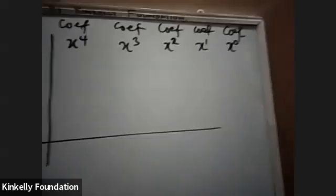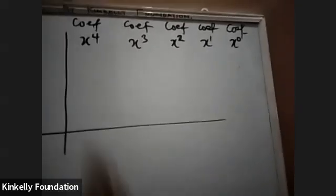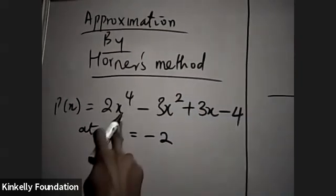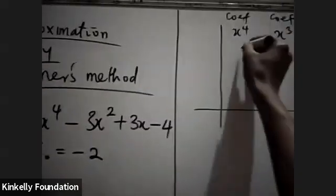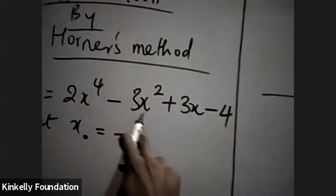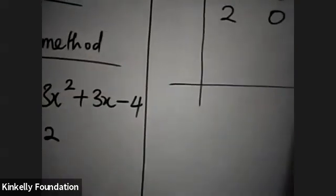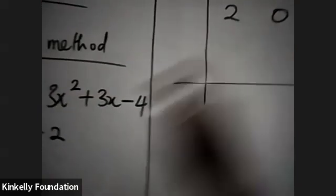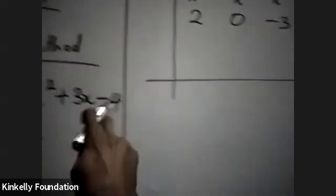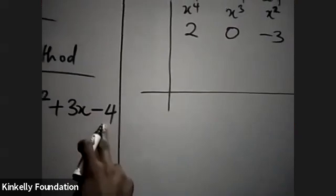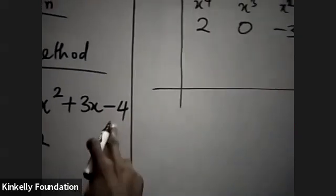So we have these things now. What is the coefficient of s raised to the power 4? That is 2. And the coefficient of s raised to the power 3 — there is no s raised to the power 3, so the coefficient is 0. Coefficient of s raised to the power 2 is minus 3. Coefficient of s raised to the power 1 is 3. And the coefficient of s raised to the power 0, which is the constant, is minus 4.